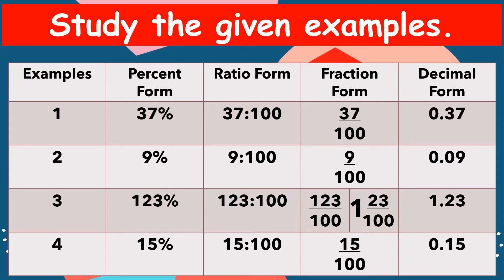Number four, we have 15%. For our ratio, we have 15 is to 100. For our fraction, we have 15 hundredths. And for our decimal form, we have 0.15 (15 hundredths).